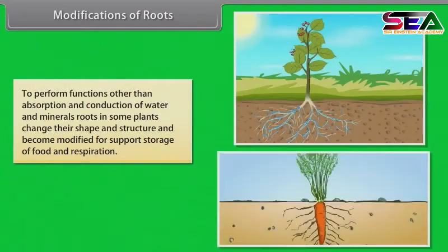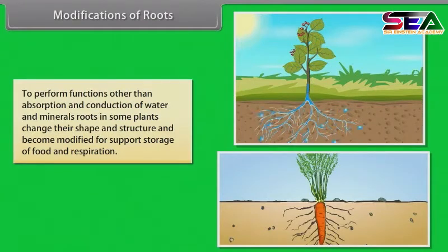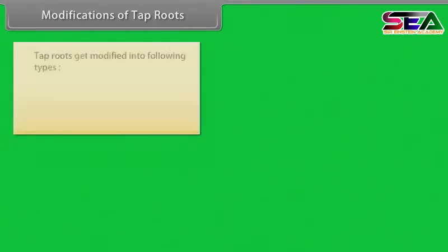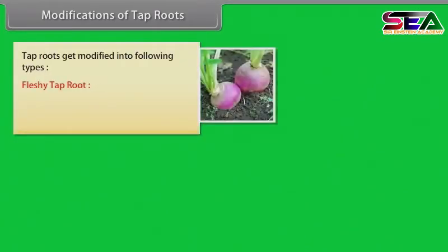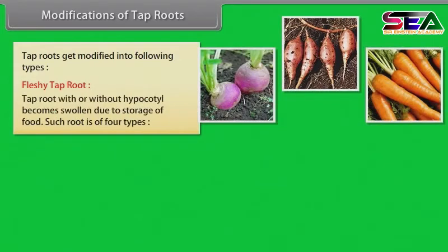To perform functions other than absorption and conduction of water and minerals, roots in some plants change their shape and structure and become modified for support, storage of food, and respiration. Modifications of tap roots: tap roots get modified into fleshy tap root types where the tap root with or without hypocotyl becomes swollen due to storage of food. Such a root is of four types.